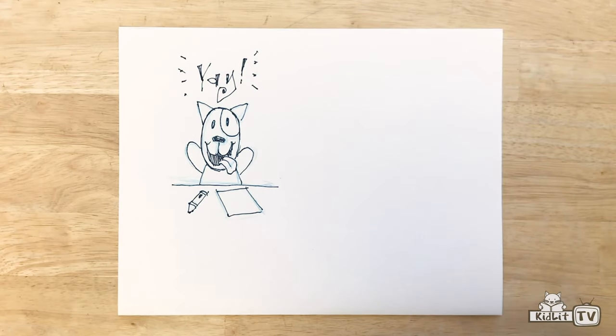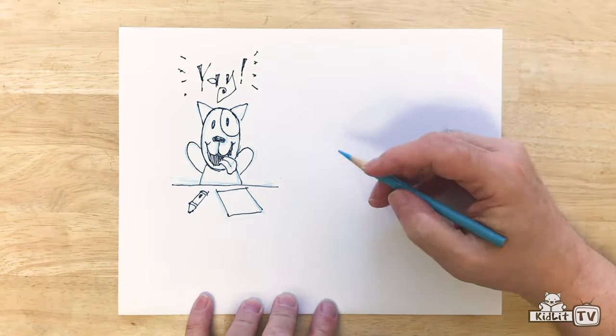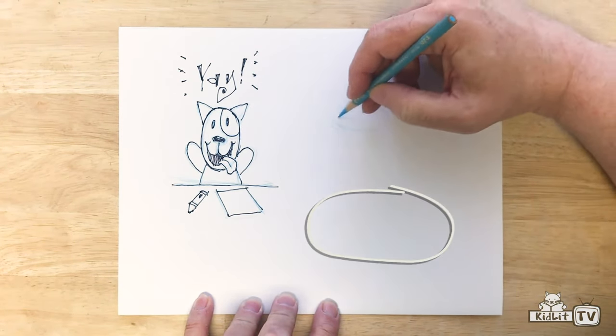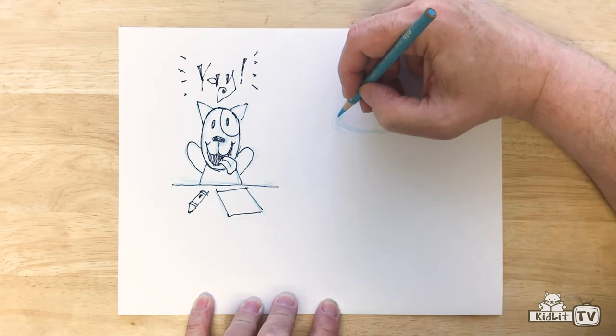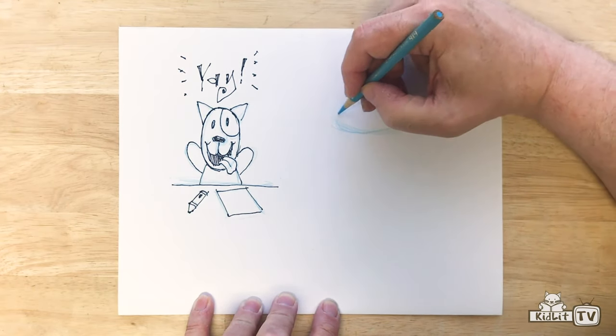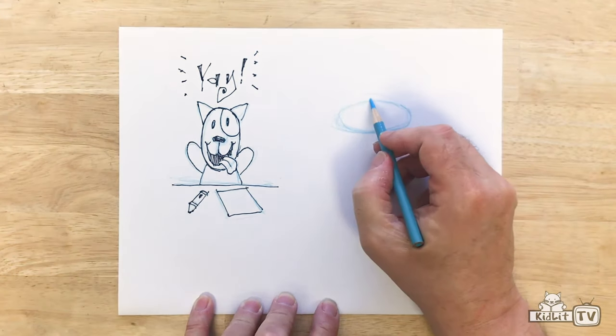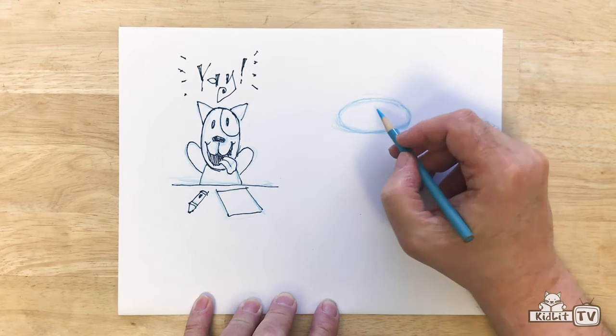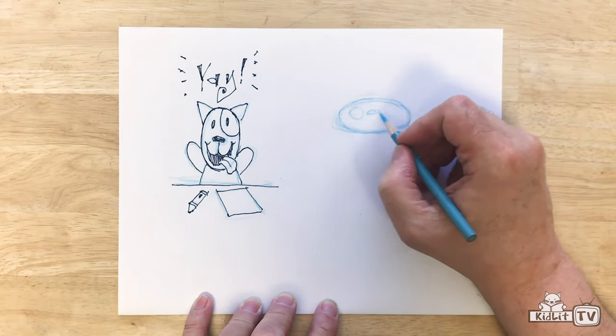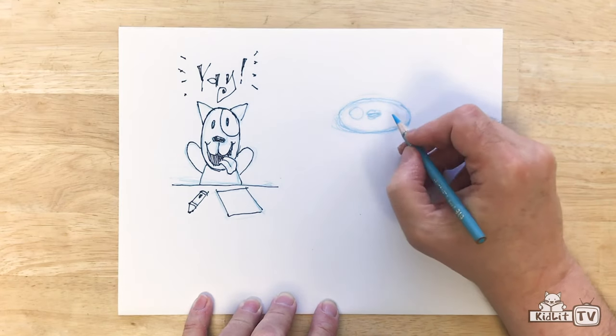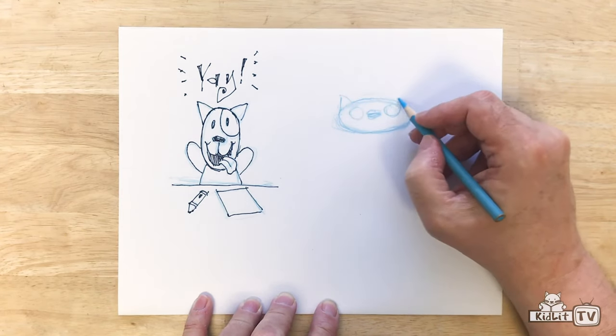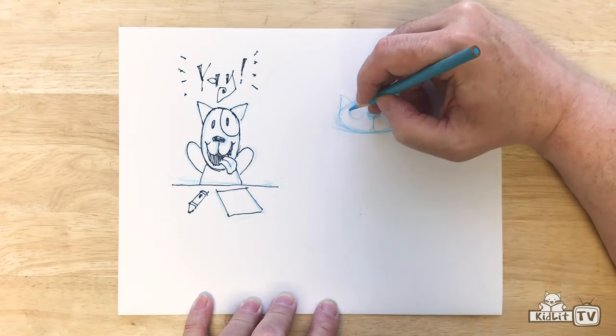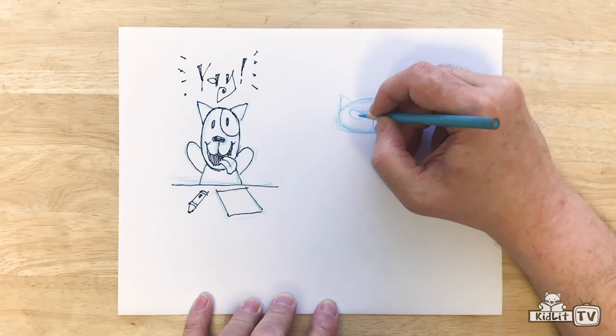Now for Simon. Again starting with my blue pencil. I also start with an oval. But this oval is more on its side. It's a horizontal oval. And it's a little flatter. And his nose. And his big eyes. Let's bring his nose down a little bit. And he also has triangles for ears. His eyes are generally downturned because he's usually kind of cranky.